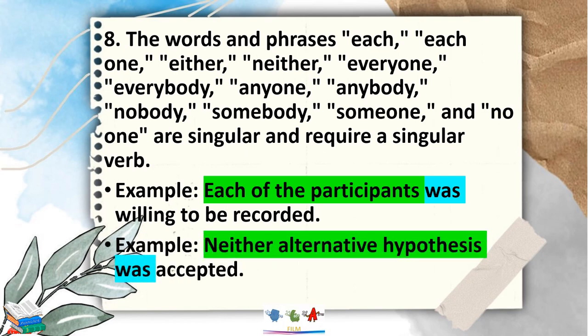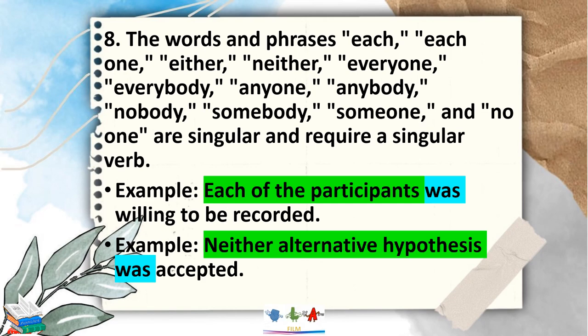Another example of Rule 8: 'Neither alternative hypothesis was exempted.' With the use of 'neither,' it is always singular, therefore we use a singular verb: 'was.'